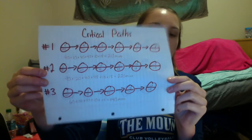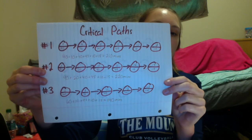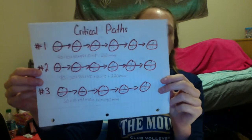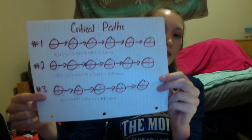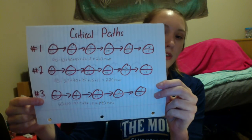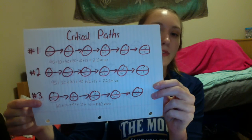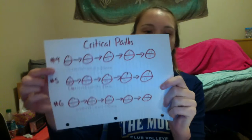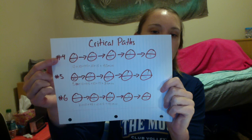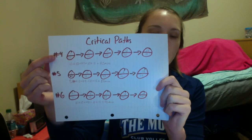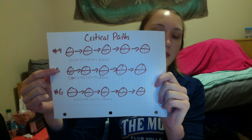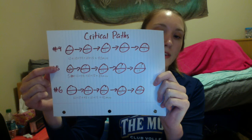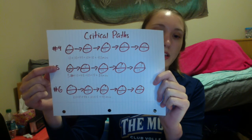For path number 3, we have activities 2, 8, 11, 12, and 13. Their durations add up to 220 minutes. For path number 4, we have activities 3, 9, 11, 12, and 13. Their durations add up to 90 minutes. For path number 5, we have activities 4, 9, 11, 12, and 13. Their durations add up to 85 minutes. For path number 6, we have activities 5, 9, 11, 12, and 13. Their durations add up to 90 minutes.